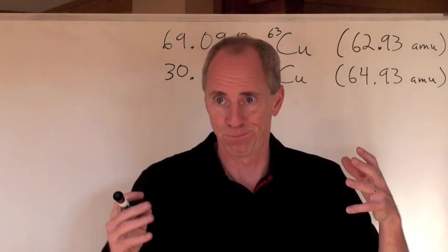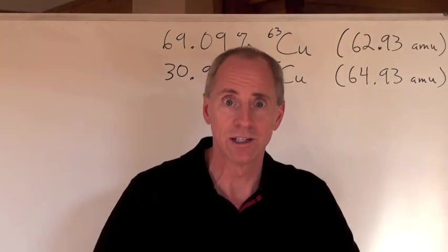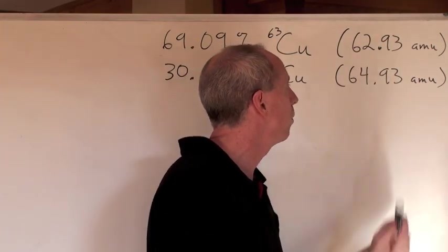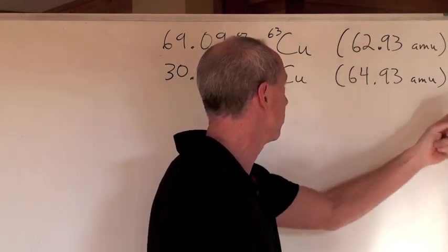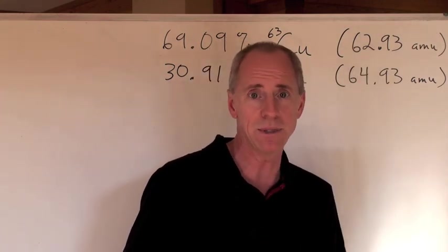The question is, what is the average molar mass? Now, dumb kid alert, dumb kid alert. Don't do this. Don't say, well, you got your 62.93 here and your 64.93 here, so what I'm going to do is I'm going to average those two together, and I know what the average is. It's going to be 63.93, which is kind of in the middle of those two.